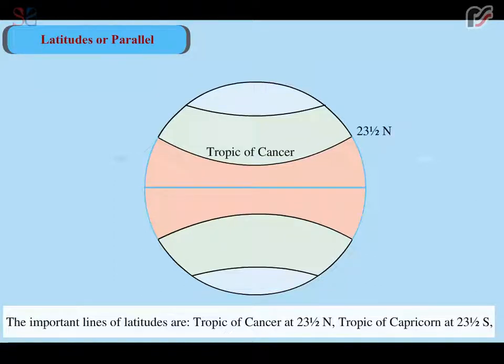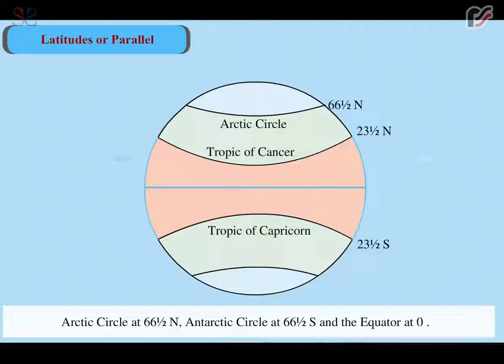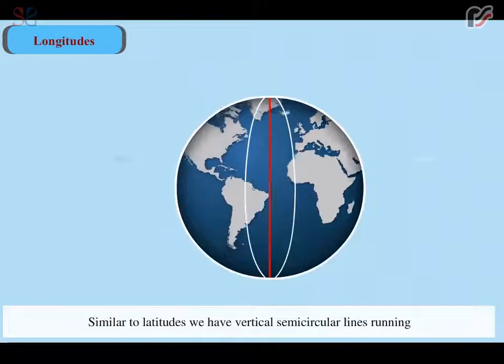The important lines of latitudes are Tropic of Cancer at 23.5 degree north, Tropic of Capricorn at 23.5 degree south, Arctic Circle at 66.5 degree north, Antarctic Circle at 66.5 degree south, and the equator at 0 degree.